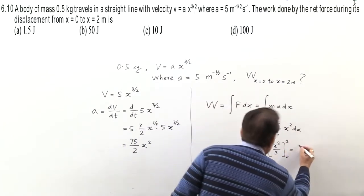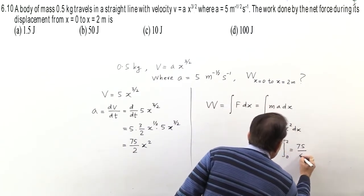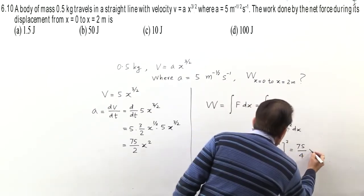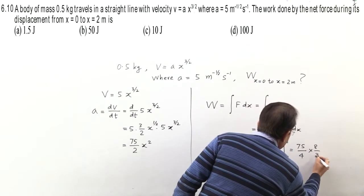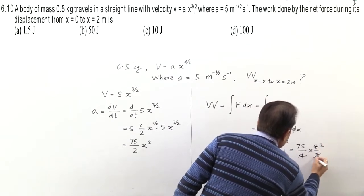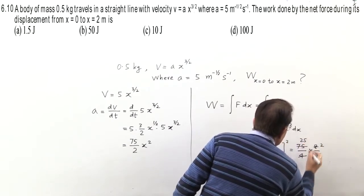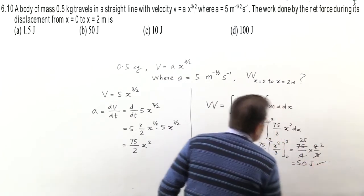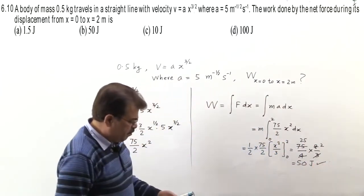Mass is 0.5, that is half. 75/2 is also constant, comes out. x square dx gives x cube by 3, limits 0 to 2. Solving: 75/4, substituting limit gives 8/3. After canceling, 25 into 2 is 50. Answer will come out in joule, so option B is correct.